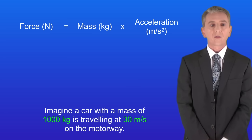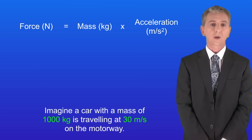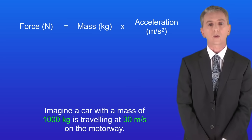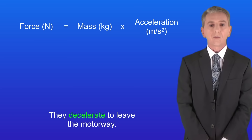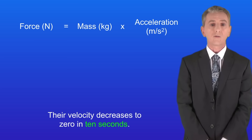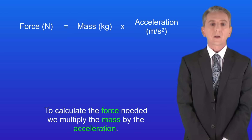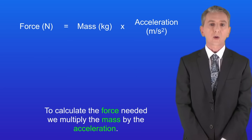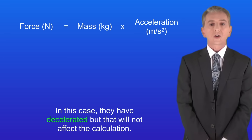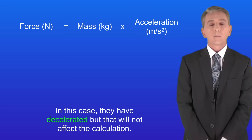Imagine a car with a mass of 1000 kilograms is traveling at 30 meters per second on the motorway. They decelerate to leave the motorway and their velocity decreases to zero in 10 seconds. To calculate the force needed we multiply the mass by the acceleration. Note that in this case they've decelerated, but that won't affect the calculation.